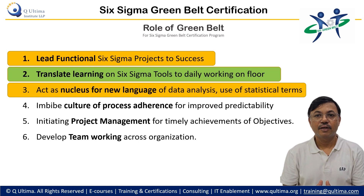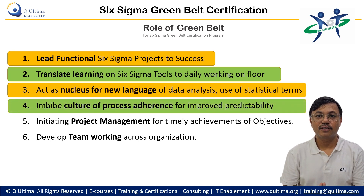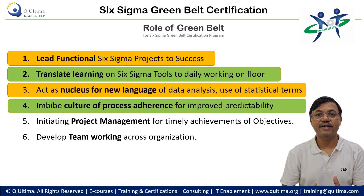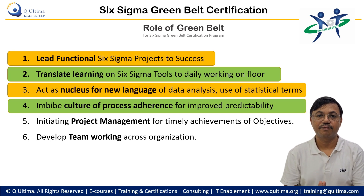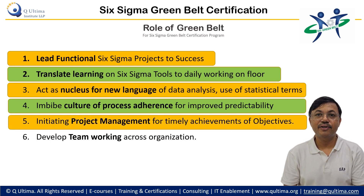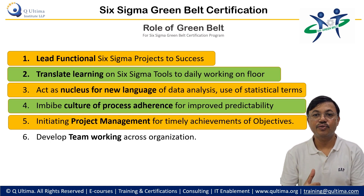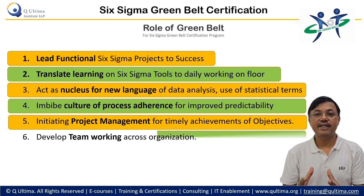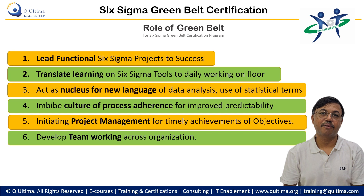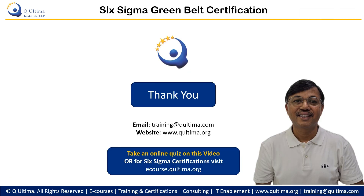A culture also develops because Green Belts understand that predictability improves with process adherence, and therefore an adherence culture — if we write a process we start following it — is developed. Green Belts also develop project management capabilities, enabling timely achievement of objectives. Even when additional resources are provided, they are able to reduce time and achieve objectives faster. They also understand team working better, and therefore a better team culture propagates in the organization. Thank you very much.